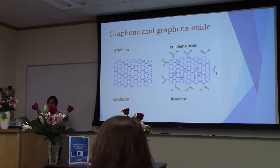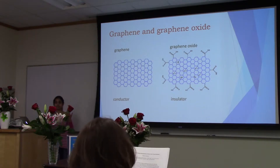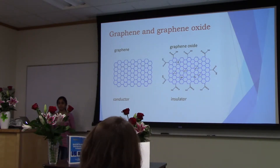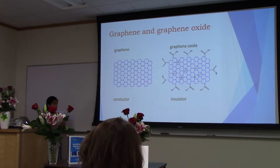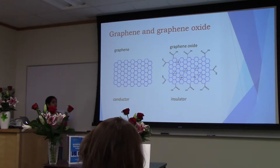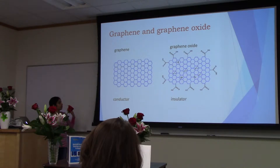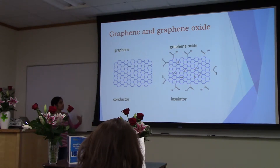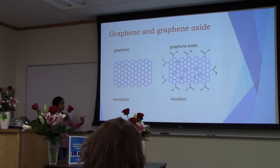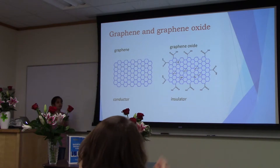Just to give a heads up — graphene is a 2D material composed of sp2 hybridized carbons. Because of its sp2 hybridization, it has a free electron which makes it a good conductor. It is also known as a zero band gap semiconductor. When we look at graphene oxide, the sp2 hybridization is converted into sp3 hybridization, and the oxidized graphene surface forms epoxide groups, hydroxide groups, or carboxyl groups.